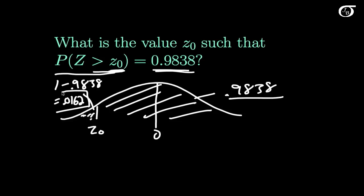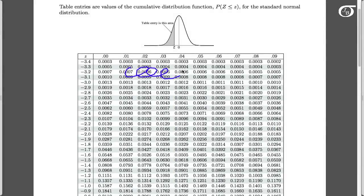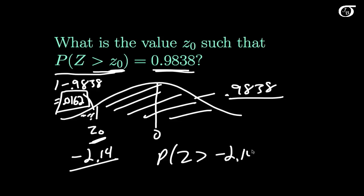So we go to the table and look up 0.0162 in the body. Here we go — 0.0162 corresponds to a Z value of minus 2.14. The Z value of minus 2.14 gives an area to the left of 0.0162, so this is the value we need. Done and done: the probability that Z is greater than minus 2.14 is 0.9838.